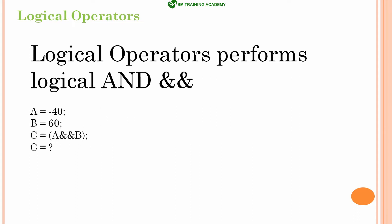Let's take an example for understanding logical AND first. In a program, you can clearly see on the screen: variable A is having the value minus 40 and variable B is having the value 60. If C is equal to A && B, this && (double ampersand) represents logical AND. If it is having only one ampersand, it means bitwise AND. There is a major difference between bitwise AND and logical AND — logical AND must have two ampersand symbols. Most often, logical operators yield a value in binary.